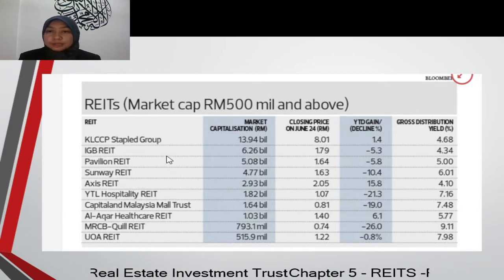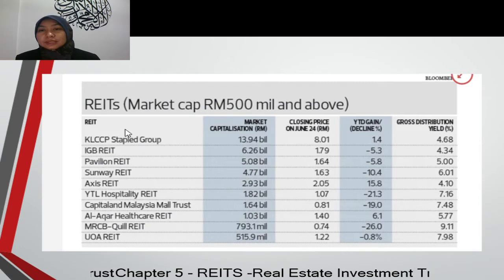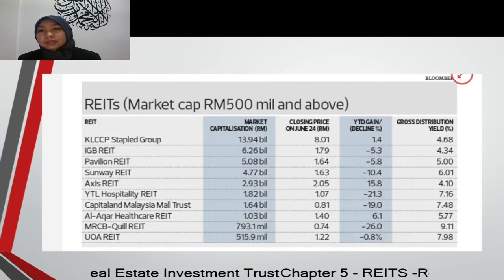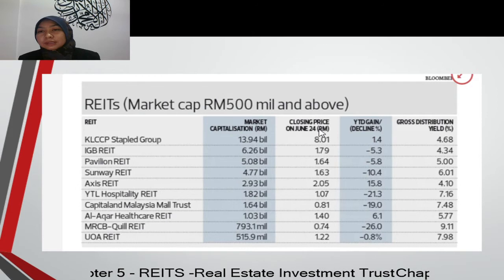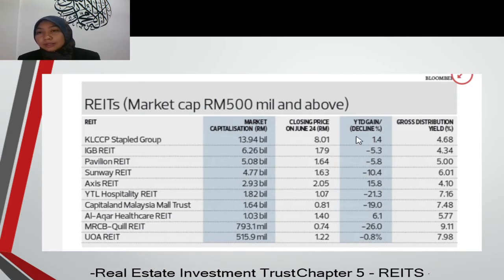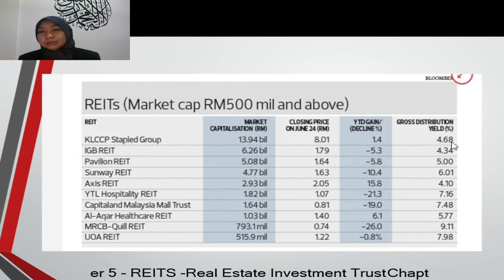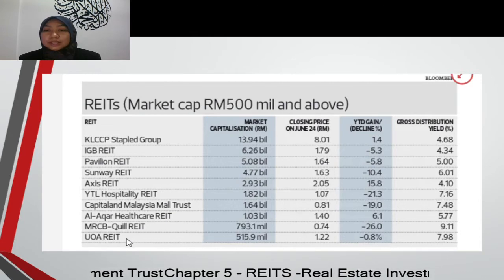Here is a list of REITs — for example, REITs with market capitalization of 500 million and above. These are both conventional and Islamic REITs. We have KLCCP Stable Group — market capitalization 13 billion, closing price 8 ringgit. The gross distribution yield is 4.68%. Among these, the lowest is UOA REITs at 7.98 ringgit.